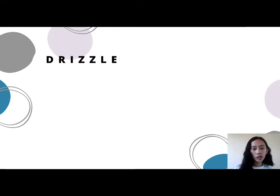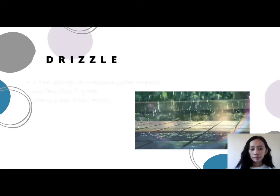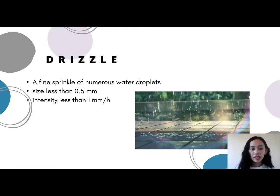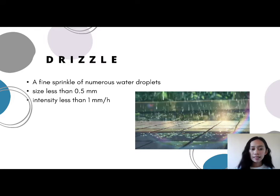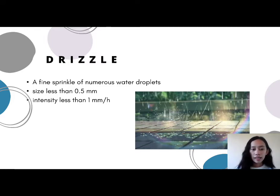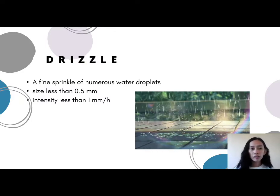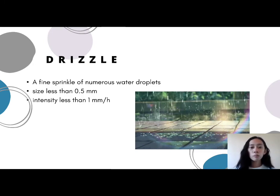The third form is drizzle. Drizzle is a fine sprinkle of numerous water droplets and has a size of less than 0.5 mm. Intensity is less than 1 mm per hour. Drizzle is what we locally call 'ambon.' In this form, the drops are so small that they appear to float in the air. It is also considered the lightest form of precipitation.